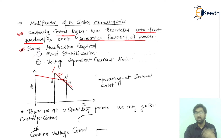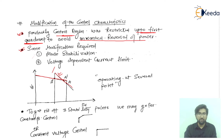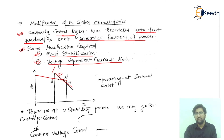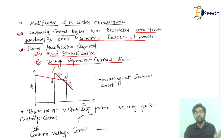Now, what are the modifications required? There are two: the first is mode stabilization, and the second is the voltage dependent current limit. Mode stabilization is a kind of advancement angle control, and voltage dependent current depends on both current and voltage, which are interrelated.